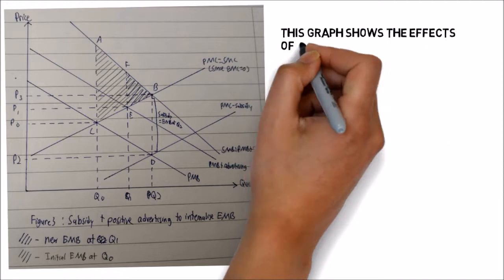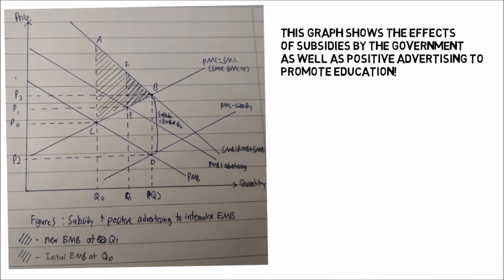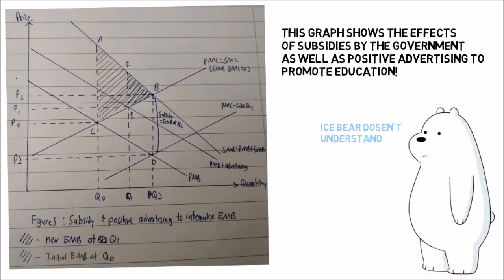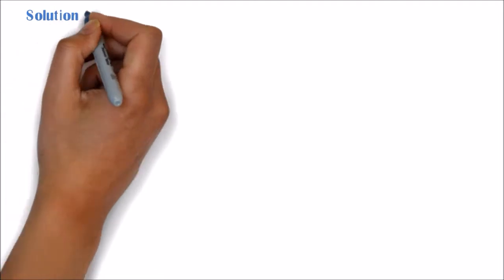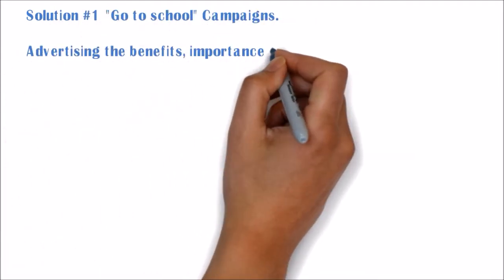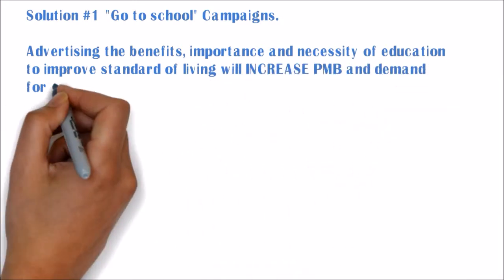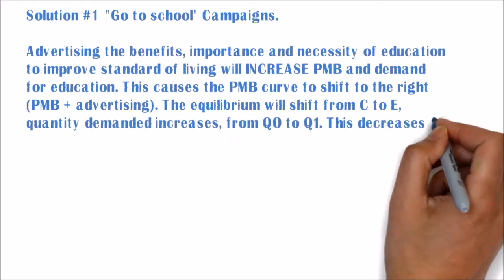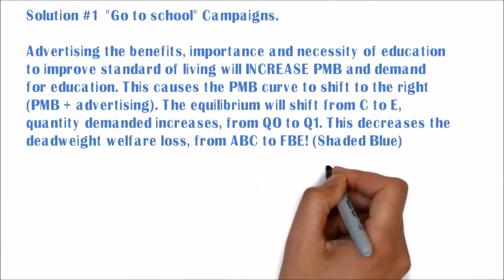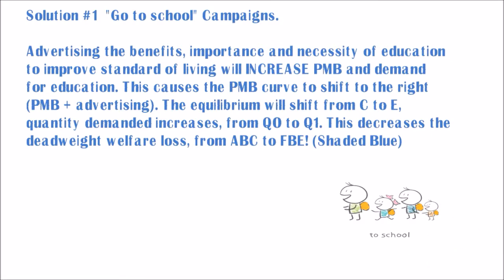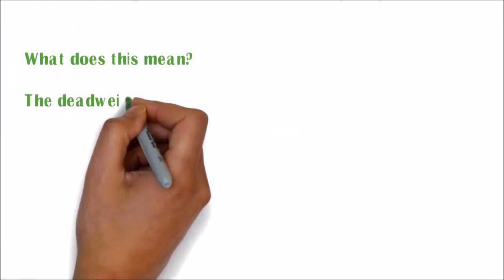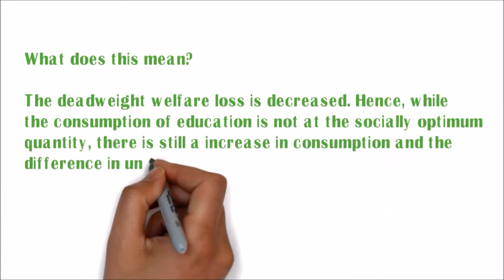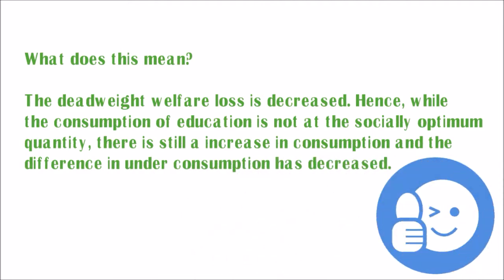This graph shows the effect of subsidies by the government as well as positive advertising to promote education. Solution one: go-to-school campaigns. Advertising the benefits, importance, and necessity of education to improve standard of living will increase PMB and demand for education. This causes the PMB curve to shift to the right. The equilibrium will shift from C to E. Quantity demanded increases from Q0 to Q1. This decreases deadweight welfare loss from ABC to FBE. The deadweight welfare loss is decreased. Hence, for the consumption of education, it is not yet at the socially optimum quantity, but there is still increased consumption and the difference in under-consumption decreases.